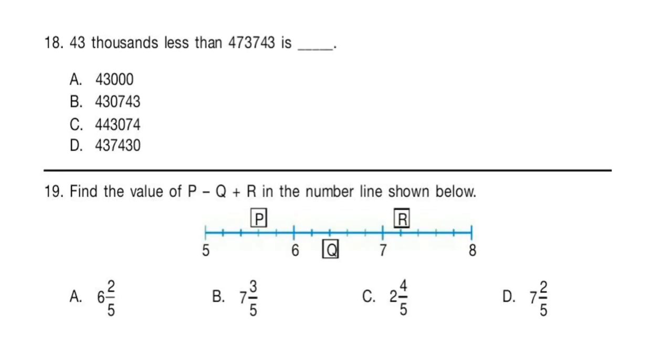Question 18: 43 thousandths less than 473743 is dash. Question 19: Find the value of P minus Q plus R in the number line shown below. Look at the number line and select your answer.